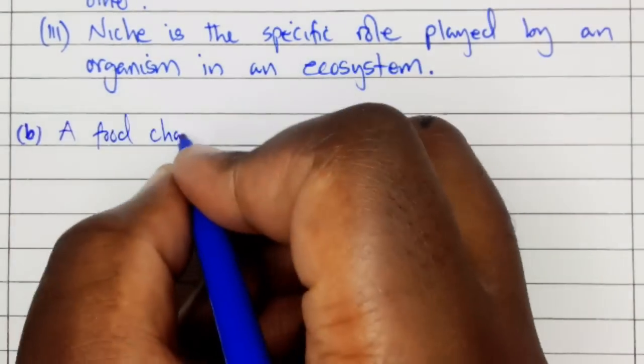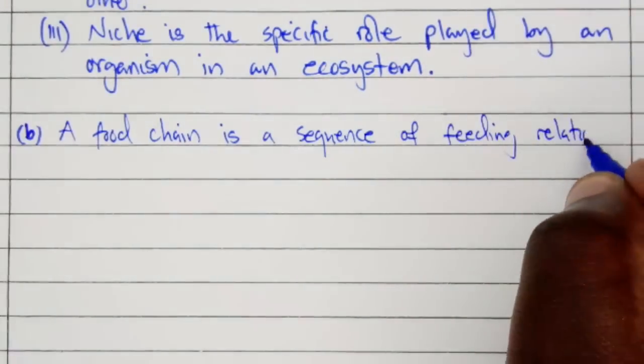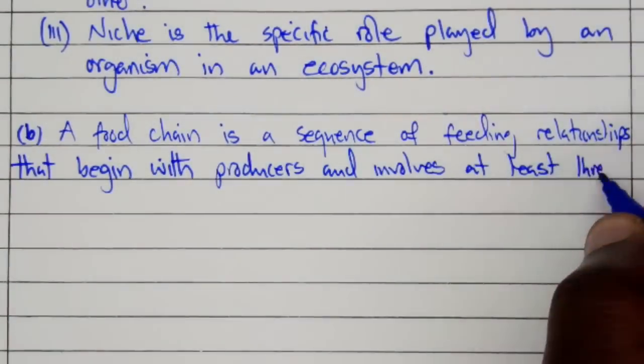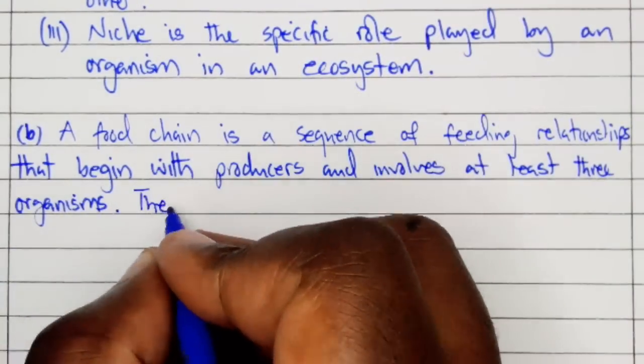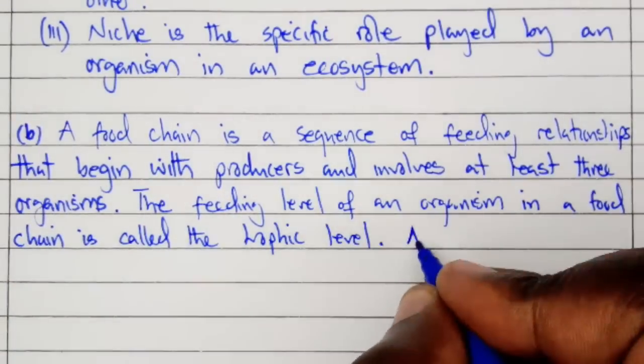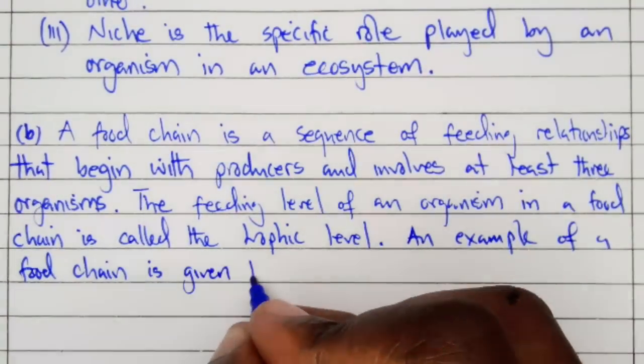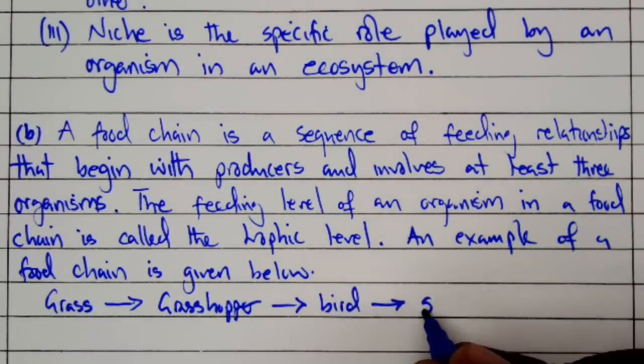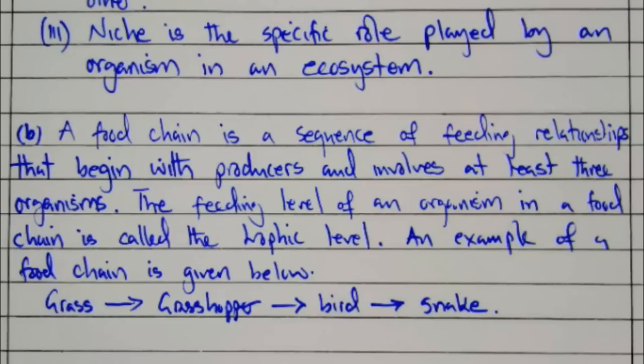Part B: A food chain is a sequence of feeding relationships that begin with producers and involves at least three organisms. The feeding levels of an organism in a food chain are called trophic levels. An example of a food chain is given below. Grass is eaten by a grasshopper, then the grasshopper is eaten by a bird, and the bird is eaten by a snake.